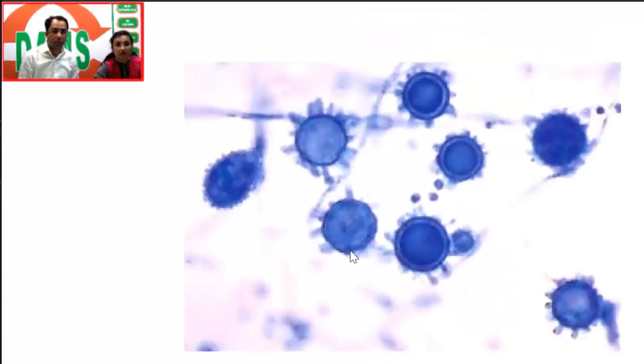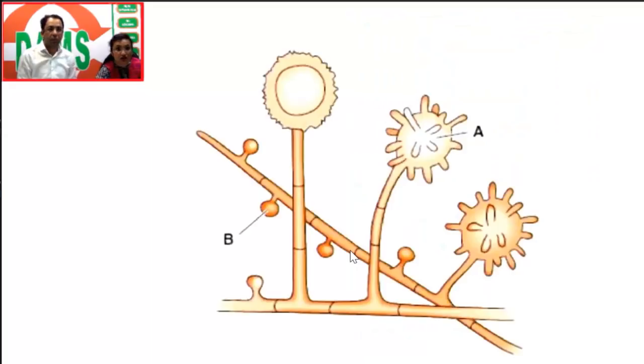I emphasize single budding because if you see multiple buds emanating from the parent cell, the diagnosis is not Histoplasma capsulatum — instead it is Paracoccidioides. If multiple wheel-like structures are seen, the description is captain's wheel or mariner's wheel appearance. If only two buds are seen, the description is Mickey Mouse appearance. But here we see only single buds from yeast cells, and classical tuberculate macroconidia — these two are the classical features of Histoplasma capsulatum.